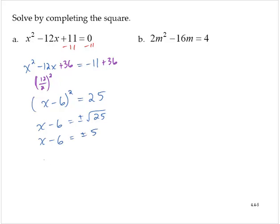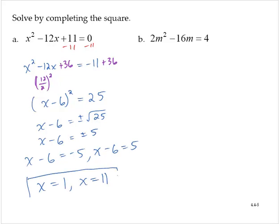Rewriting this as two equations: x minus 6 equals negative 5, and x minus 6 equals positive 5. Adding 6 to both sides of each equation, I have x equals 1 and x equals 11. So the solutions of this equation are 1 and 11.